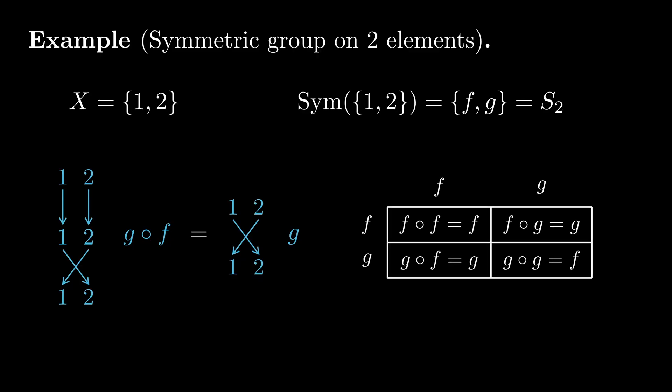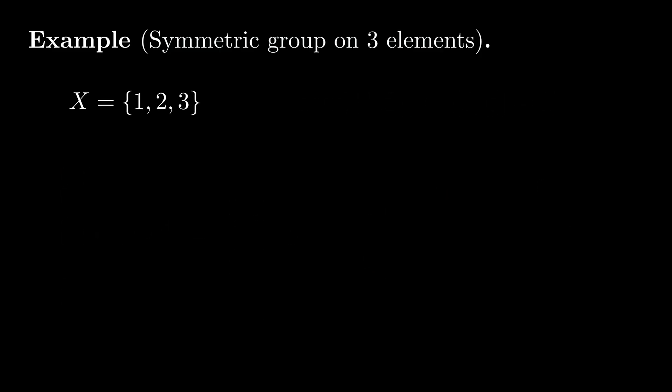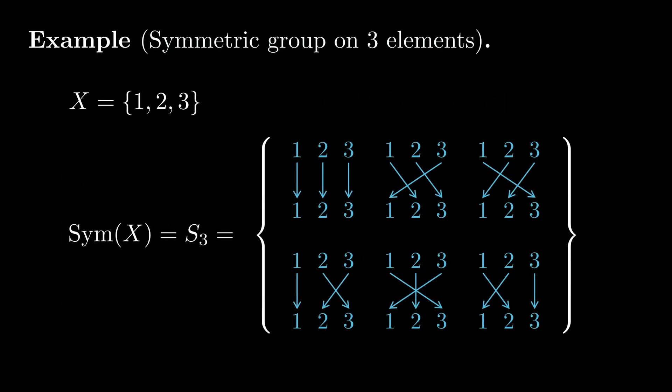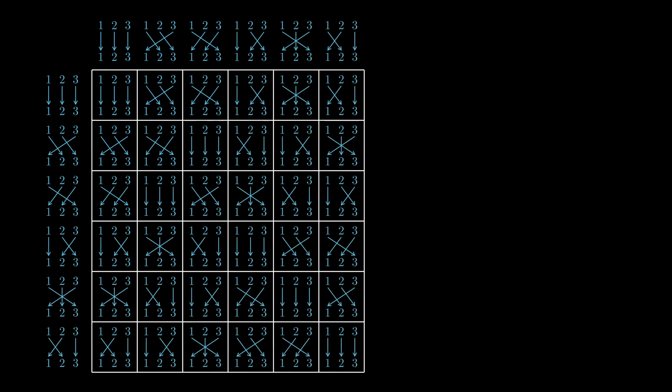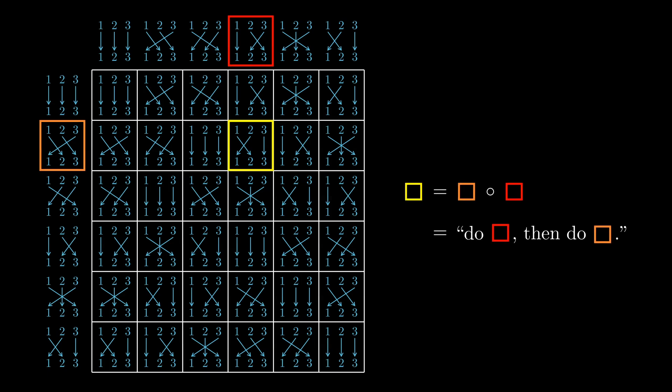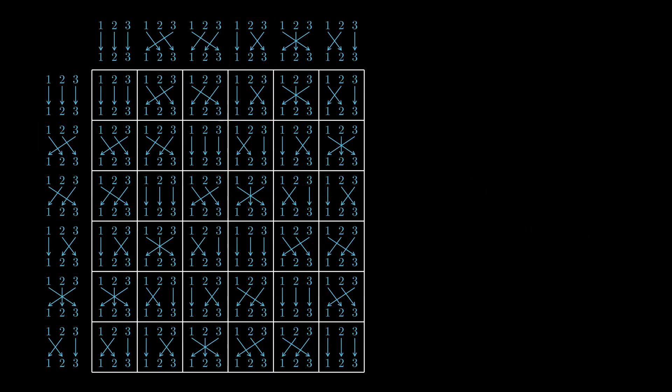If x instead has three elements, then Sym(x) consists of these six bijections, and here's the multiplication table. Recall that function composition is performed right to left, meaning, for example, the function boxed in yellow is the result of applying the function boxed in red, then the function boxed in orange.